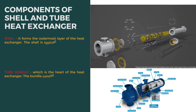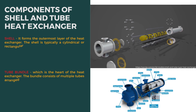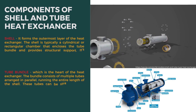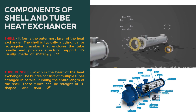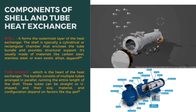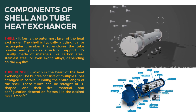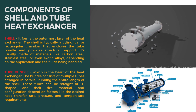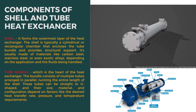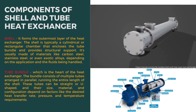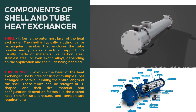The first component we will discuss is the shell. As the name suggests, it forms the outermost layer of the heat exchanger. The shell is typically a cylindrical or rectangular chamber that encloses the tube bundle and provides structural support. It's usually made of materials like carbon steel or even exotic alloys, depending on the application and fluids being handled.